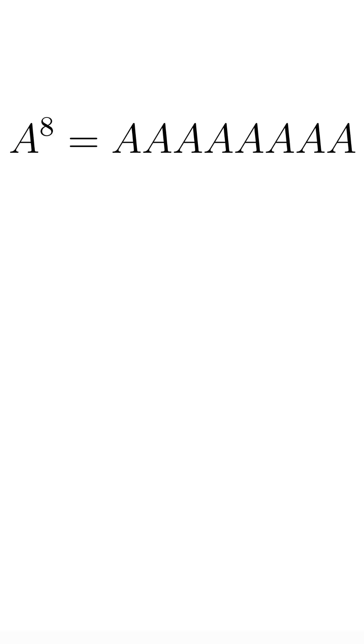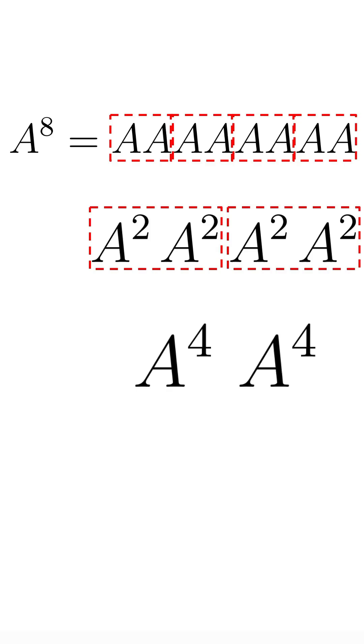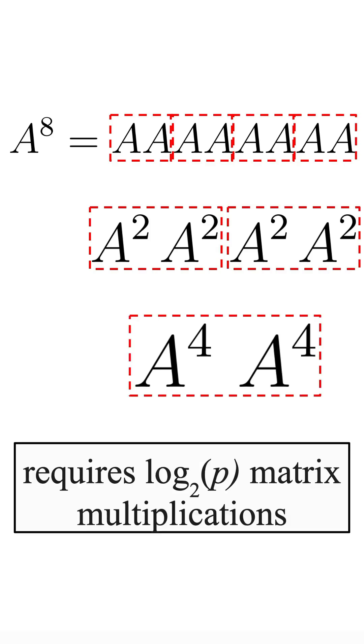One trick that you can apply is to first compute A squared, then use A squared to compute A to the power of 4, then use A to the power of 4 to compute A to the power of 8, and so on, requiring log 2 of p matrix multiplications.